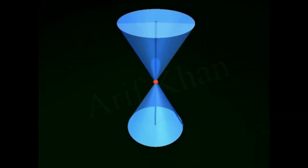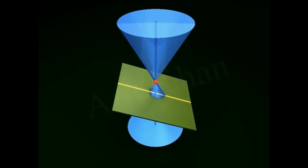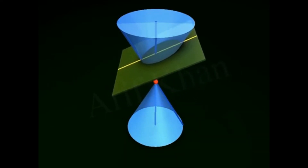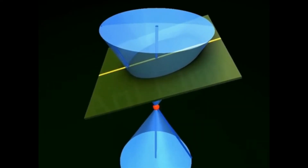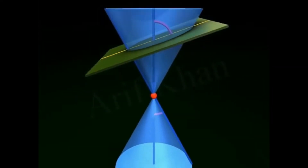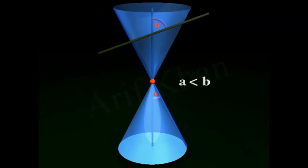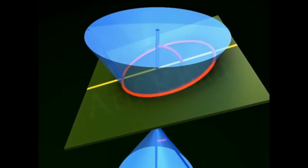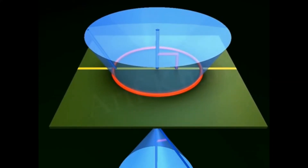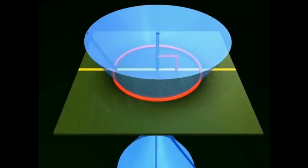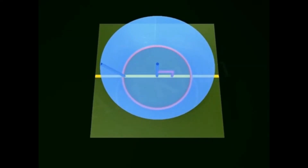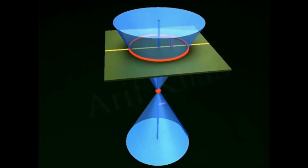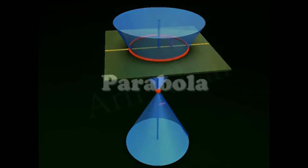Ellipse: When the plane intersects the double-right circular cone such that the angle between the plane and the axis is greater than the vertex angle, we get a closed curve called an ellipse. When the plane is perpendicular to the axis, the ellipse becomes a circle. Thus, a circle is a special type of ellipse.